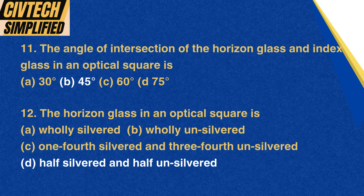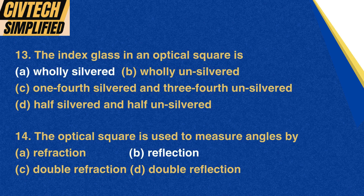Question 12: The horizon glass in an optical square is: A. Wholly silvered, B. Wholly unsilvered, C. Three-fourths unsilvered, D. Half silvered. Correct option: A. Wholly silvered. Question 14: The optical square is used to measure angles by: A. Refraction, B. Reflection, C. Double refraction, D. Double reflection. Correct option: B. Reflection.